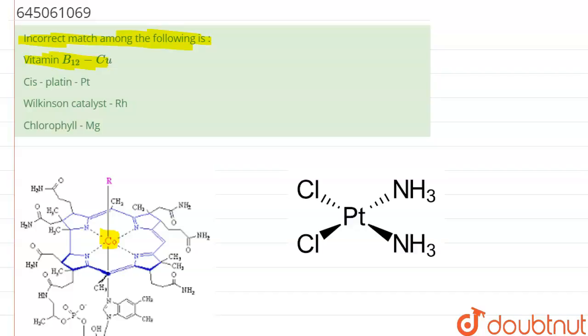Let us see the rest of the options. Cis-platin - this is the structure of cis-platin and yes it does contain Pt in it, that is platinum.